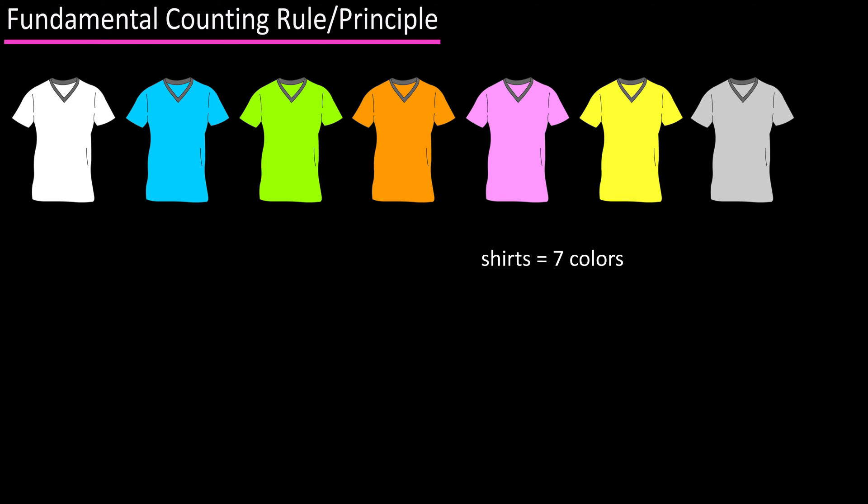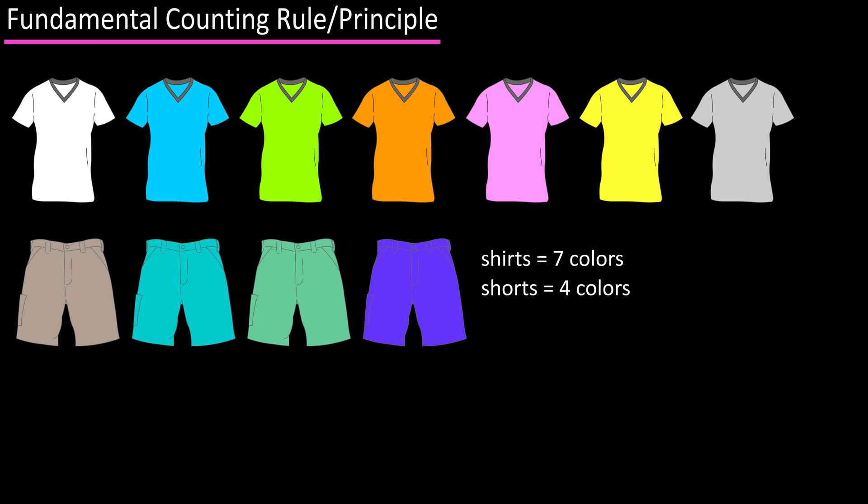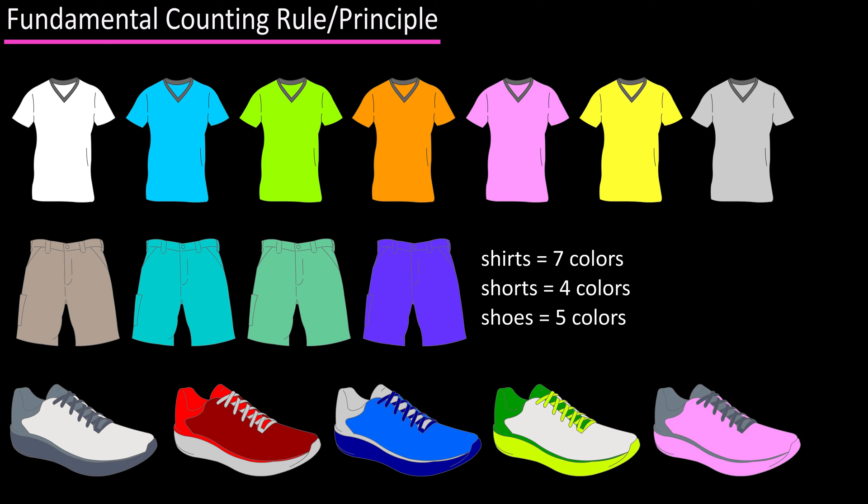They have the shirt you want in seven different colors, the shorts you like in four different colors, and some cool shoes in five different colors. And because you're a stats nerd like me, you want to know how many different sequences of the three items are possible.